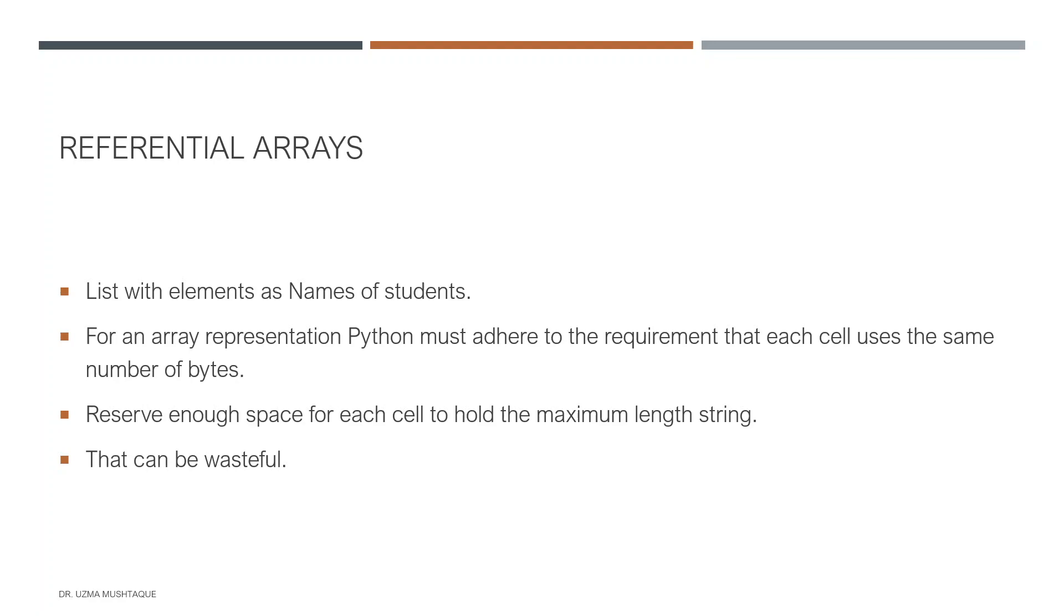Now, what can happen if I have a list with elements as names of students? Let's assume I have John, Helena, and my name, and so on. This is also an array, right? But the elements in this array are of different sizes because the elements themselves are strings of different lengths. How will Python save these values? We just said that each element should have an equal number of bytes associated with it.